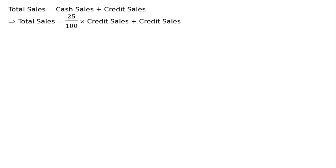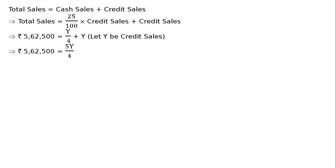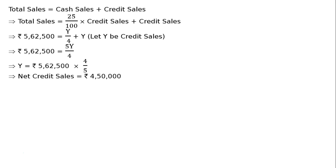Total sales equals cash sales plus credit sales. Cash sales is 25% of credit sales. Let credit sales be Y. Then Rs. 5 lakh 62,500 equals Y by 4 plus Y, that is 5Y by 4. Therefore Y equals Rs. 5 lakh 62,500 multiplied by 4 by 5, giving net credit sales equal to Rs. 4 lakh 50,000.